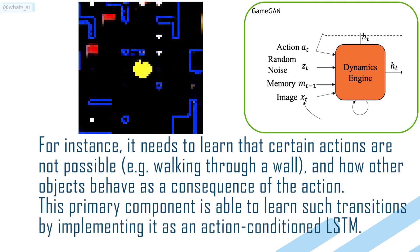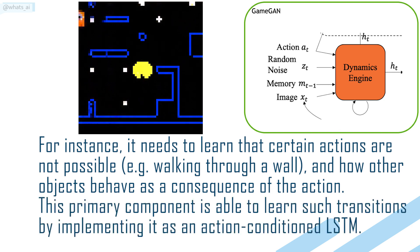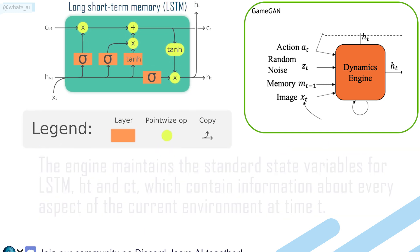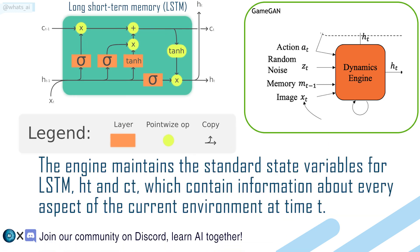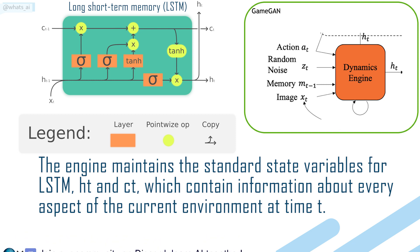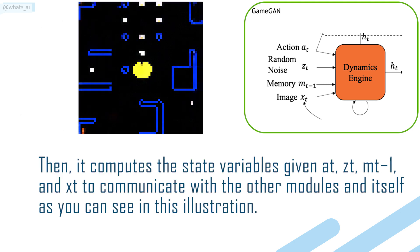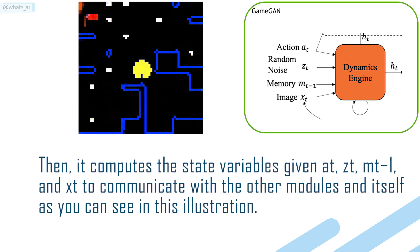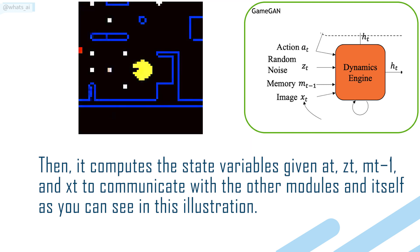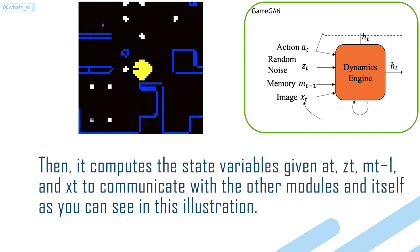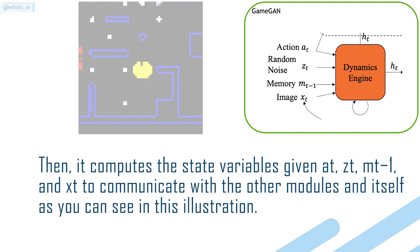This primary component is able to learn such transitions by implementing it as an action-conditioned LSTM. The engine maintains the standard state variables for LSTM, HT and CT, which contain information about every aspect of the current environment at time t. Then it computes the state variables given AT, ZT, M(T-1), and XT to communicate with the other modules and itself, as you can see in this illustration.